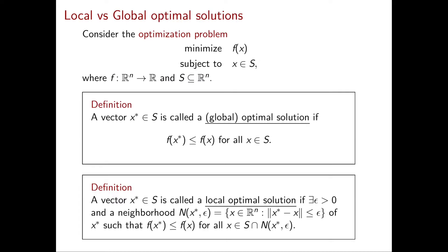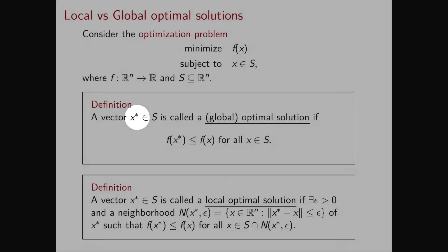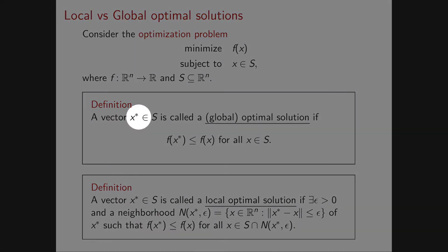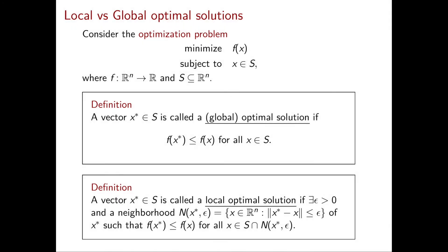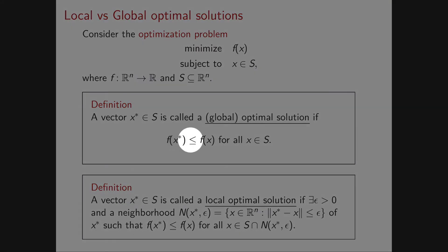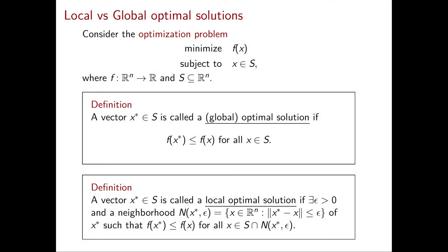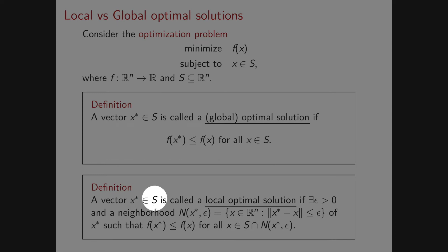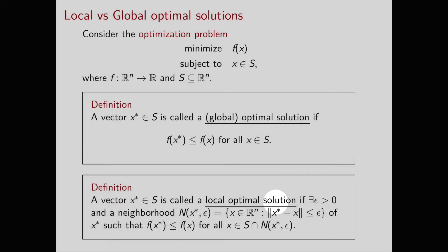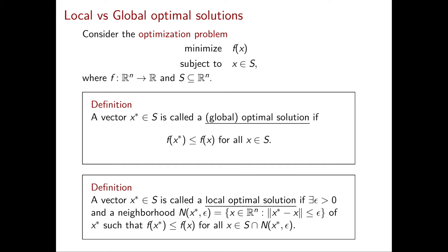The second property regards the difference between global optimal solutions and local optimal solutions. We say that x* is a global optimal solution if the cost of x* is less than or equal to the cost of x for any other feasible x. A feasible vector x* is called a local optimal solution if it is the best feasible vector in a small enough neighborhood of x*.